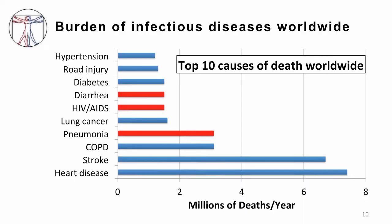Let's talk a little more about the burden of infectious diseases worldwide. If you look at the WHO list of the top 10 causes of death worldwide, you can see that three of them are infections. Number four overall is pneumonia or respiratory tract infections, followed by HIV/AIDS, and then diarrheal diseases. So you can see that the burden of disease is quite significant.